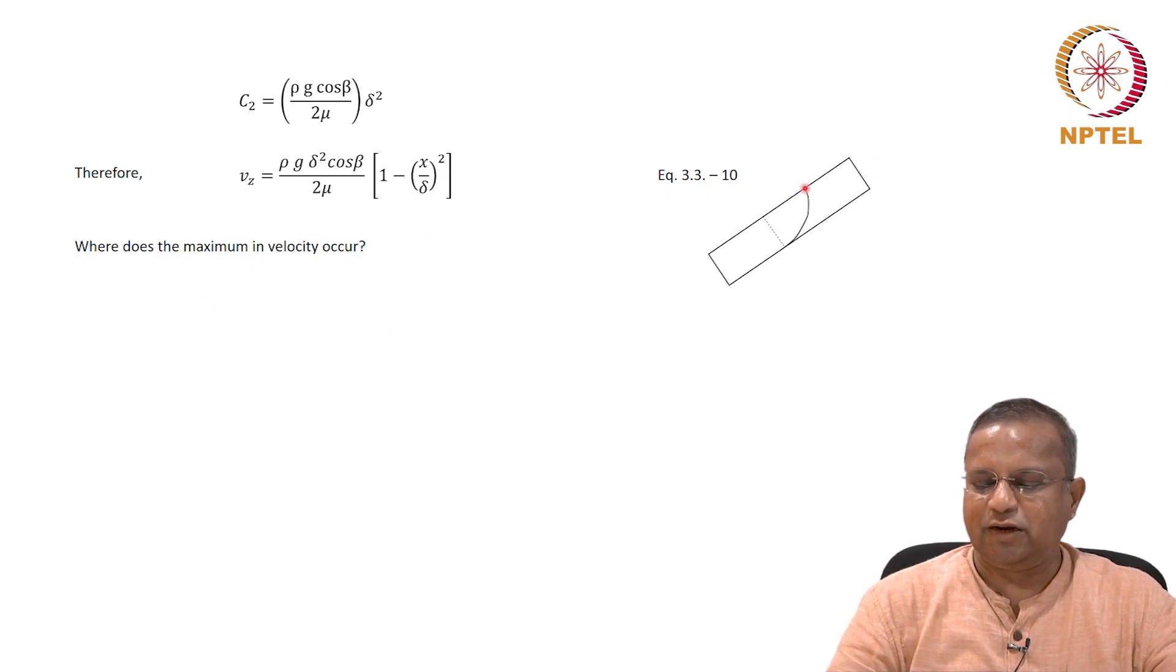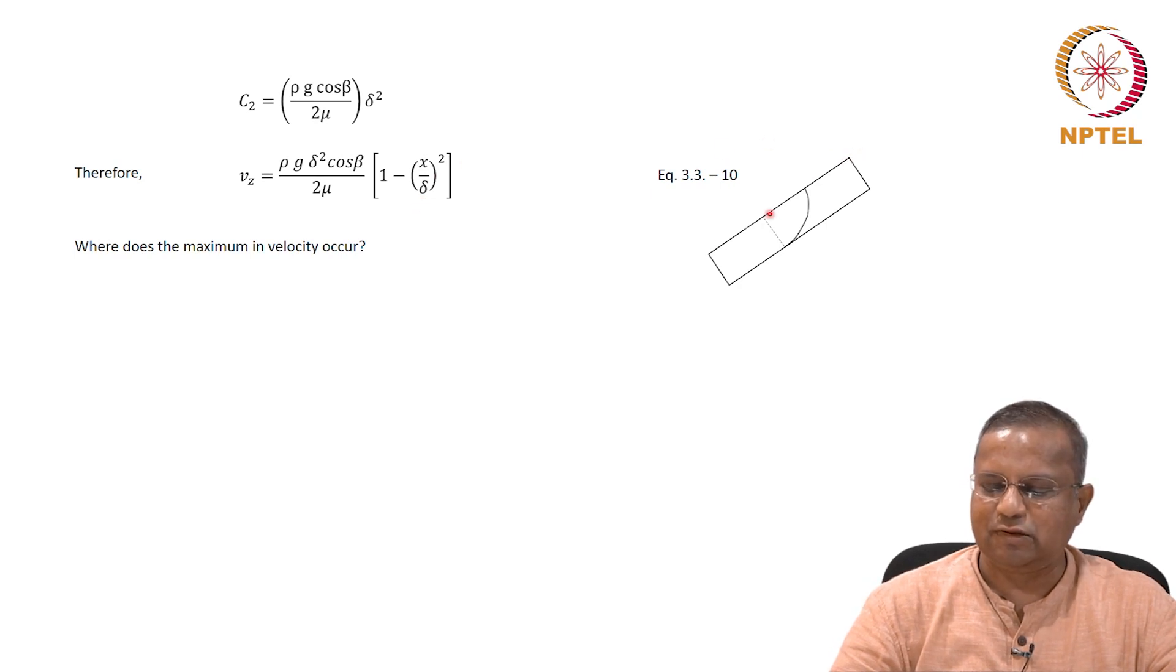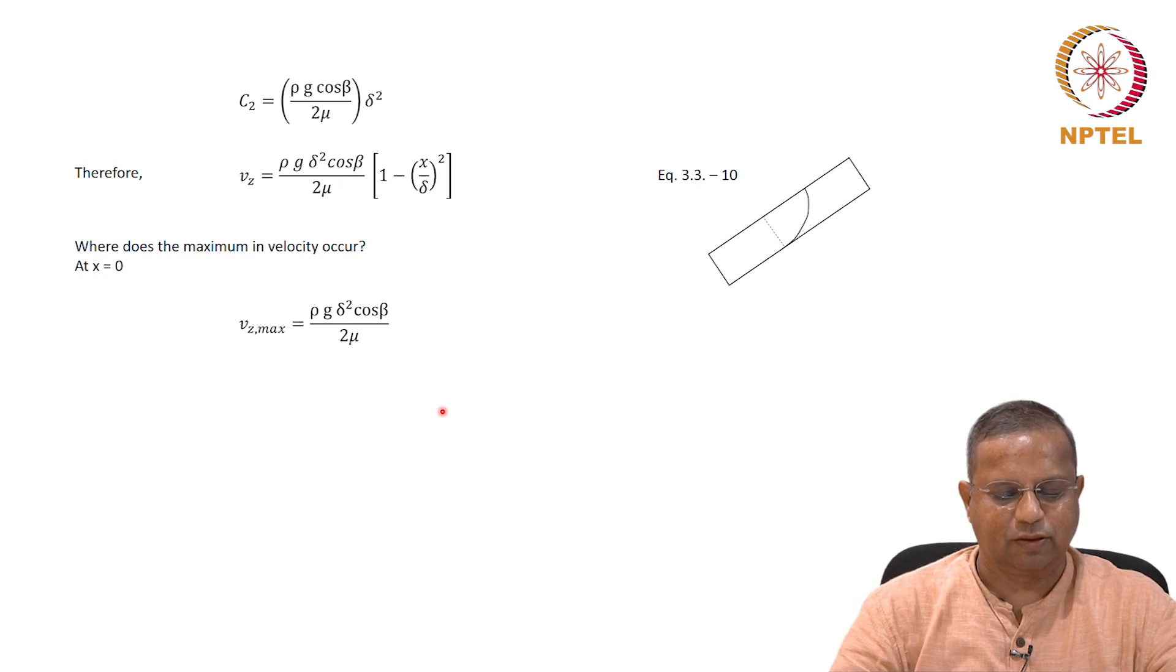Where does the maximum velocity occur? You can directly look at this and say it occurs at the top surface. If you look at the expression, it is 1 minus x by delta squared. The maximum value of this will happen when this takes the value of 1, which happens if x is 0. Therefore, the maximum velocity happens when x is 0, which is this surface here. At x equals 0, vz max equals rho g delta squared cos beta by 2 mu. Equation 3.3-11.